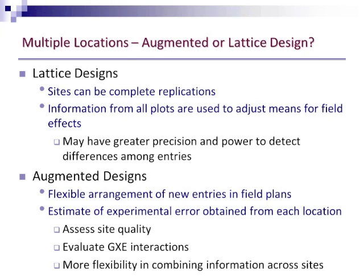However, there are other situations where you might prefer to use augmented designs across locations. One desirable feature is the very flexible arrangement of new entries in your field plans — for instance, in participatory plant breeding, growers could recommend different augmented varieties at different sites. You could also obtain an estimate of experimental error from each location to assess site quality, analyze G by E interactions, and have more flexibility in deciding how to conduct your across-site analyses and which sites to combine together.